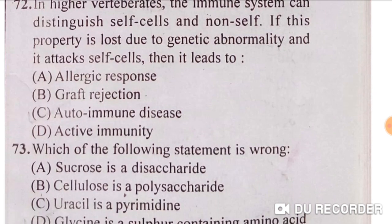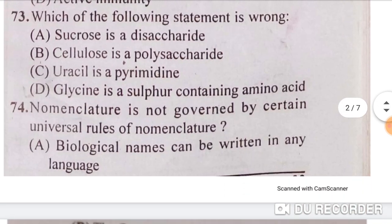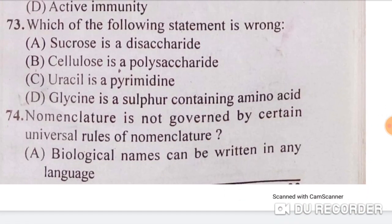In higher vertebrates, the immune system can distinguish self-cells and non-self cells. If this property is lost due to genetic abnormality and the immune system attacks self-cells, it leads to autoimmune disease — option C is correct. Next: which of the following statements is wrong? Sucrose is a disaccharide — true. Cellulose is a polysaccharide — true. Uracil is a pyrimidine — true. Glycine is a sulfur-containing amino acid — not correct. So option D is correct.